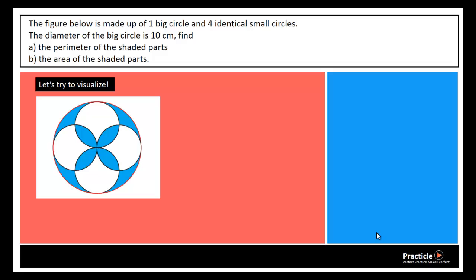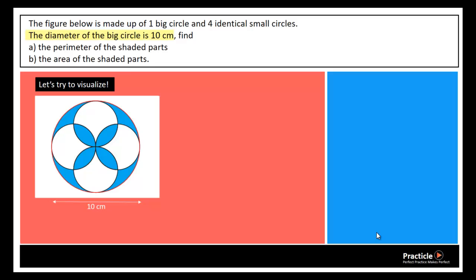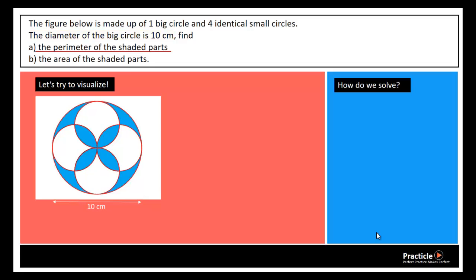Hello everyone. Today the question we're going to solve is this: the figure below is made up of one big circle and four identical small circles. The diameter of the big circle is 10 cm, and we are supposed to find the perimeter of the shaded parts. For this question we'll take pi to be 3.14.